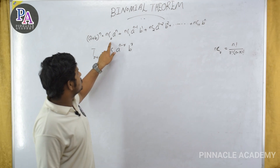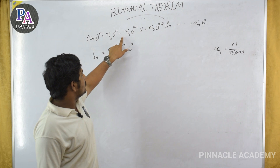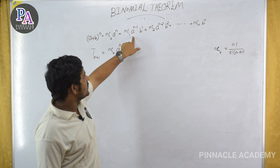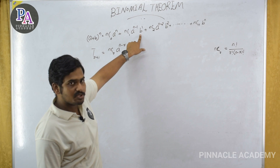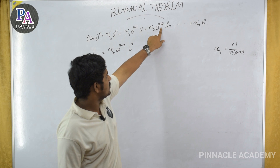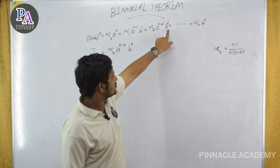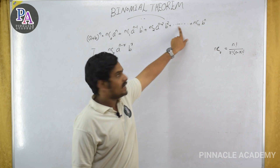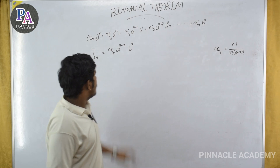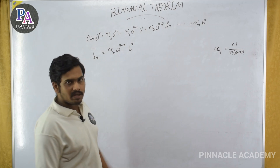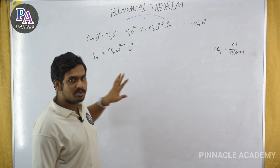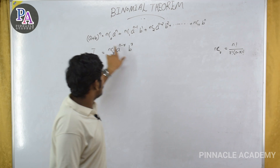A plus B the whole raise to n equals nC0·a^n plus nC1·a^(n-1)·b^1 plus nC2·a^(n-2)·b^2 plus etc., plus nCn·b^n.